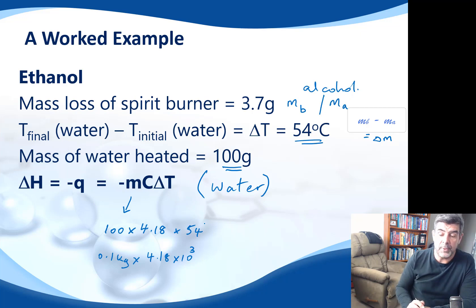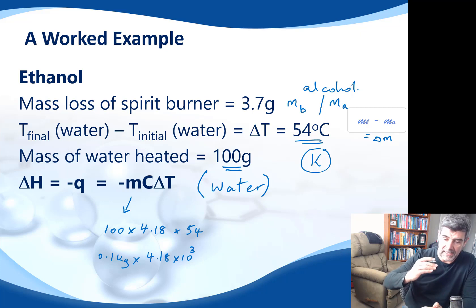And then I'm going to multiply that by the delta T, which in this case you can see was a temperature rise for the water of 54 degrees. Now, of course, I've put it here in degrees C, and you'll also find that the temperature unit that you're given usually is in Kelvin. Now, of course, you can convert the initial and final temperatures into temperatures in Kelvin.